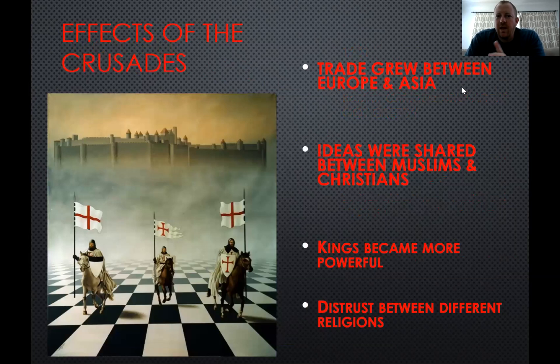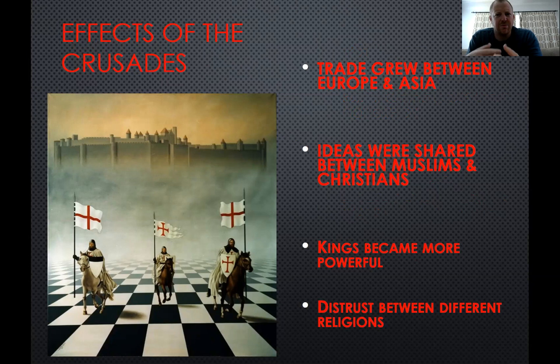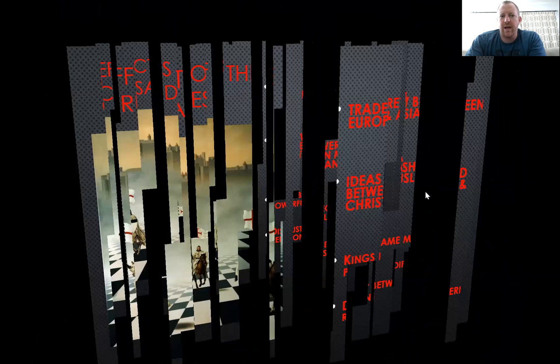Here are the effects of the Crusades: trade between Europe and Asia grows, and ideas are shared between Muslims and Christians. Kings become more powerful because when Pope Urban told people they'd get access to heaven and be forgiven of their sins if they go fight — and then the Crusades don't really give Christians what they want — you're going to see the power of the church start to decline and the power of government start to increase. And that is where we will stop for Chapter 10, Sections 1 and 2. In a couple of days I'll make one for Section 3, and then we still have the others to finish. I hope you enjoyed — if you have any questions, feel free to reach out. Talk to you guys soon.